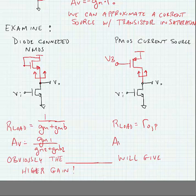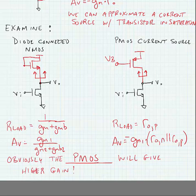And our voltage gain would then be GM of the bottom transistor times the output resistance of the NMOS in parallel with the output resistance of the PMOS. Of course this is much higher than the gain for the diode connected load. So obviously the PMOS transistor will give higher gain. And that's what we're looking for.